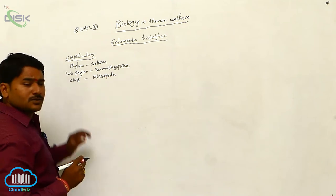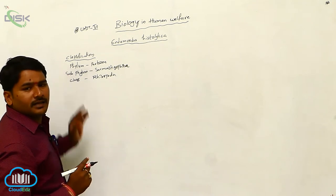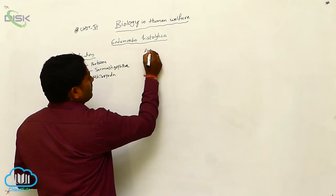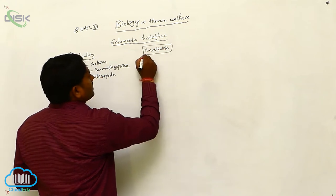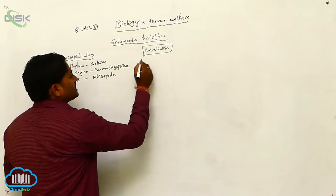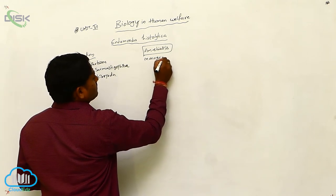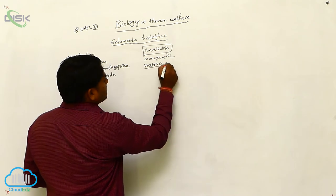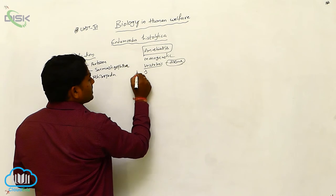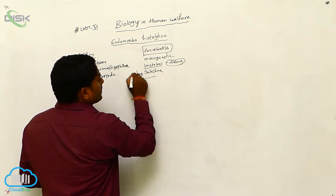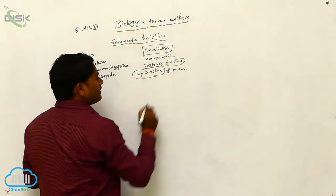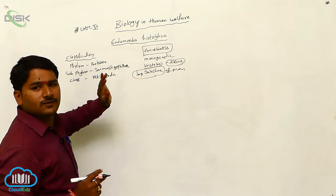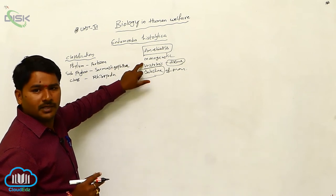Class Rhizopoda. Entamoeba histolytica is a protozoan parasite which causes amoebiosis disease in human beings. It is a monogenetic parasite, meaning it completes its life cycle in only one individual — the human being. It is also a histozoic parasite, living in the large intestine of man.